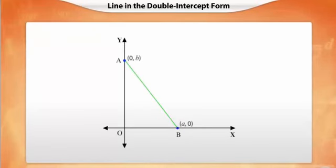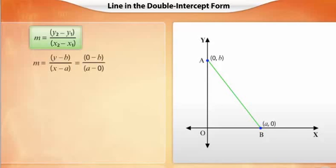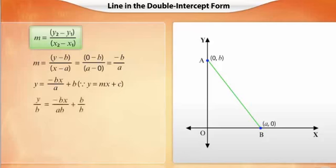Consider a line that intersects the y-axis at (0, b) and the x-axis at (a, 0). The slope of a line is given by the ratio of (y2 minus y1) and (x2 minus x1), where (x1, y1) and (x2, y2) are two points on the line. By substituting and solving, we get m is equal to minus b upon a. Using the slope-intercept form, we get y is equal to minus bx upon a plus b. Dividing the equation by b and regrouping, we get x upon a plus y upon b equal to 1. This equation is known as the double-intercept form of a line.